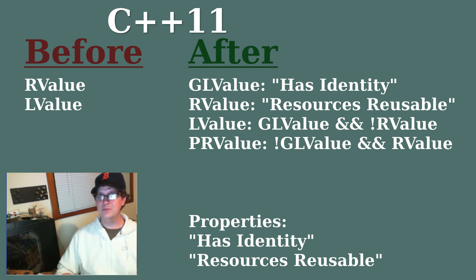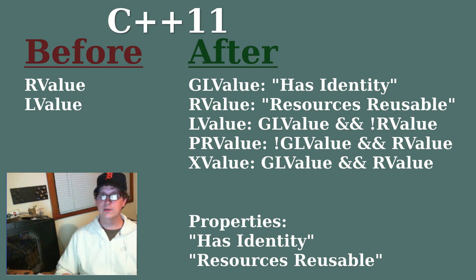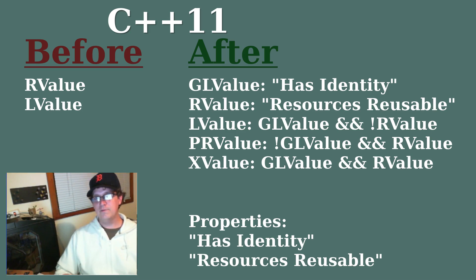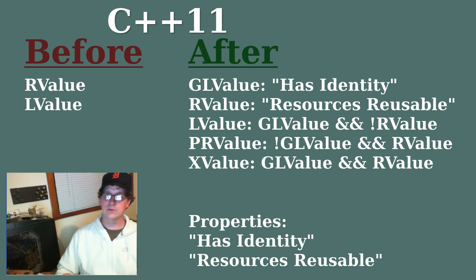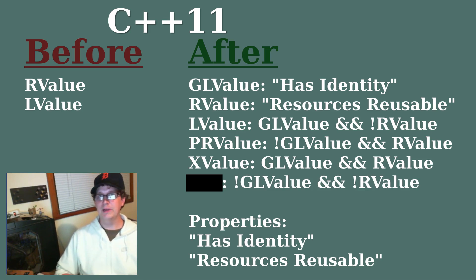In the case where a value has both properties we call these X values. This is to say it has an identity and we can potentially reuse its resources because it's about to end its lifetime. The fourth possibility in the combination of these two properties, where it has no identity and you cannot reuse the resources, is not named because it doesn't exist in C++.